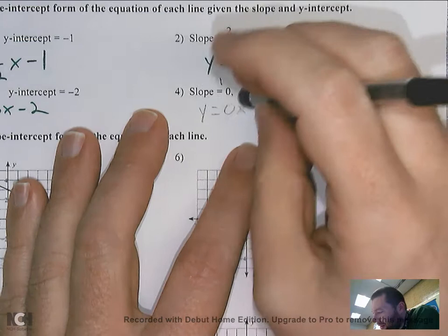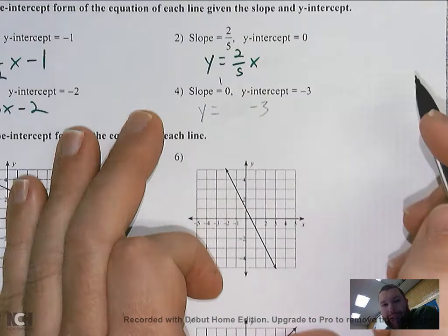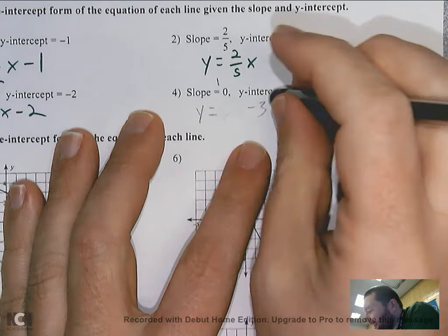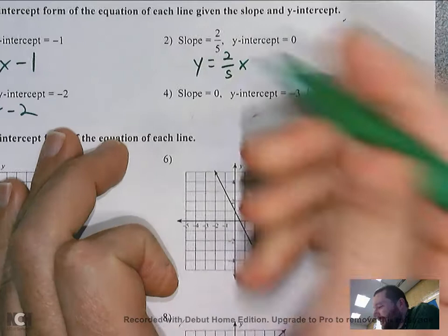I'm just left with y equals negative three every single time, no matter what I plug in for x. That is a legitimate equation — y equals negative three is an equation.